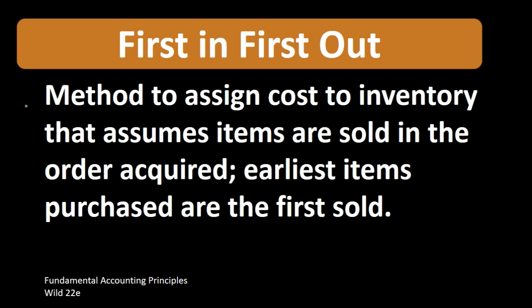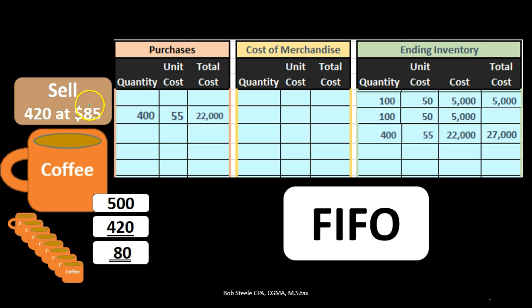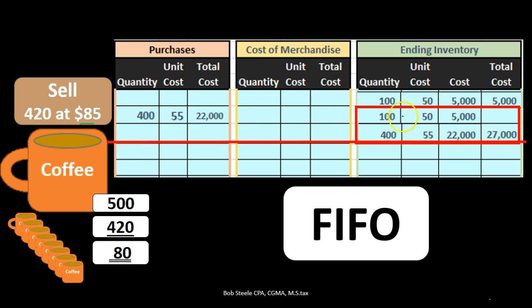Let's take a look at an example. We're going to sell 420 units at $85 — that $85 is the sales price, not the cost. When we look at the cost, we go to our worksheet. We have two layers of inventory — same inventory (coffee mugs) but purchased at different amounts at different times. We purchased 100 of them earlier for $50 each, for a total of $5,000, then purchased another 400 at $55 each.